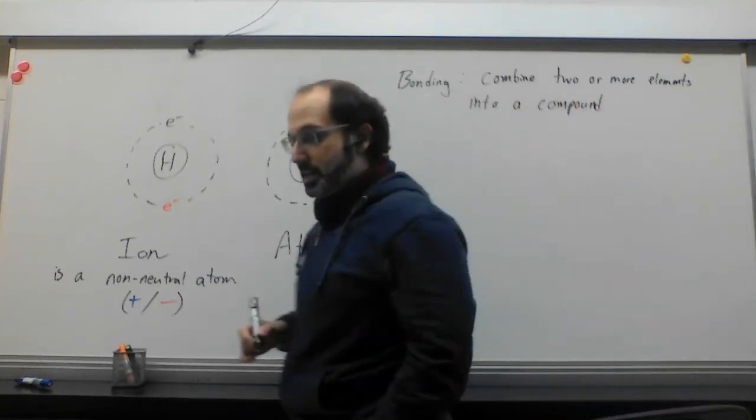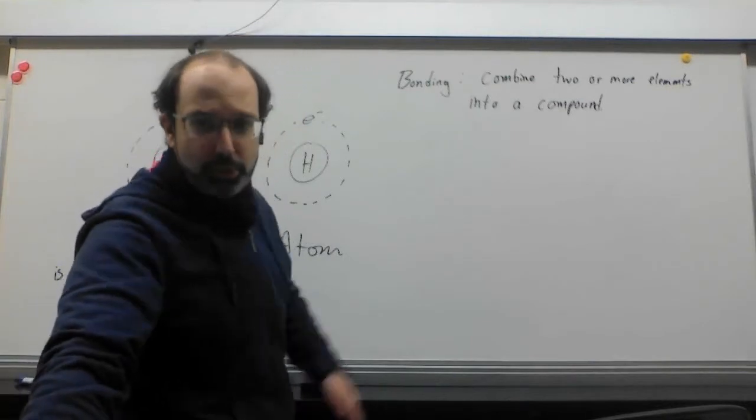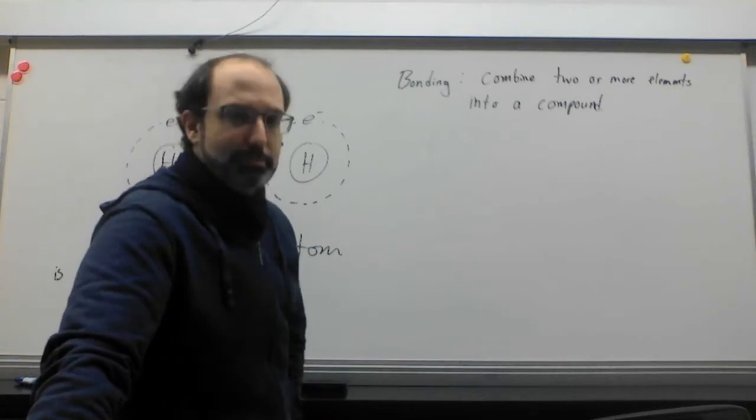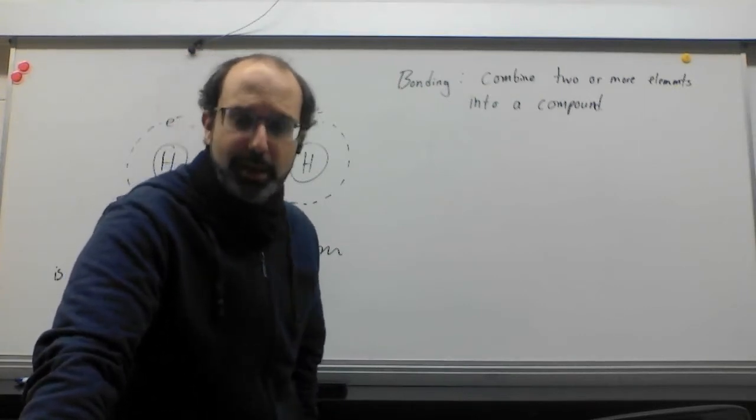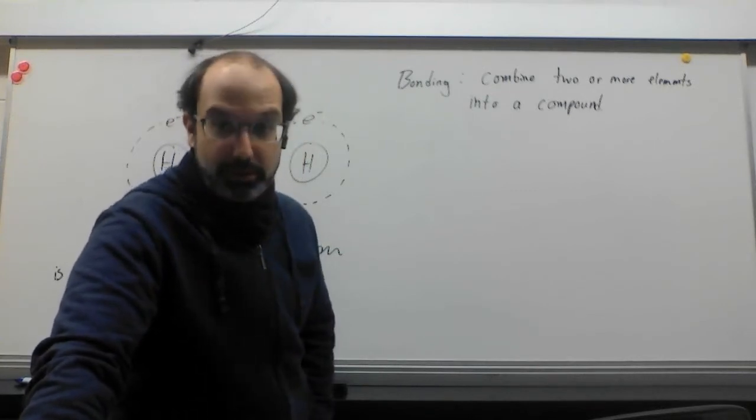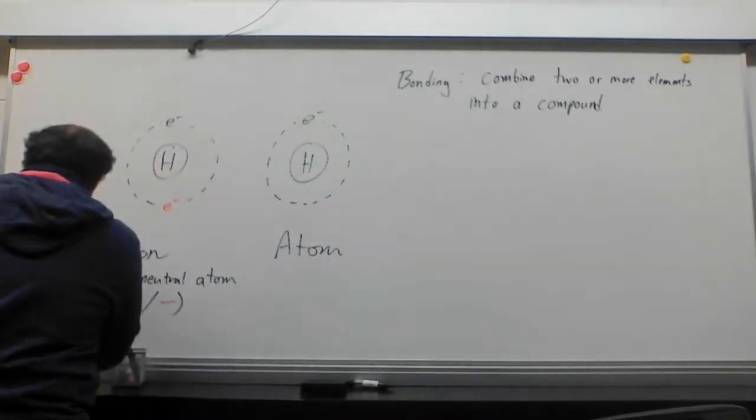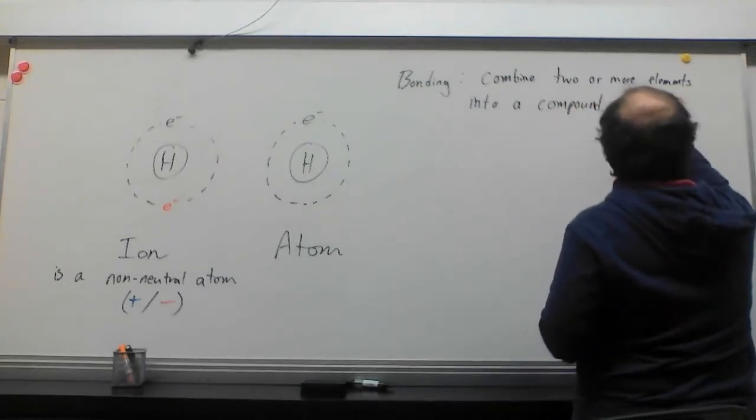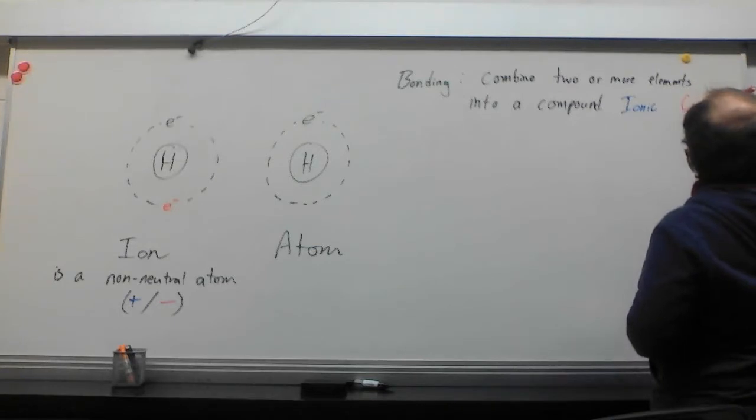But either way, bonding is what happens when you combine two or more elements to form a compound. So bonding is another big definition for us. It's when we combine two or more elements into a compound. Now, a compound is just a fancy science way of saying a bigger, more complicated thing. So you are made of compounds because you are not simple by any stretch of the imagination. You are made of multitude of complicated and interlocking pieces. So you would be a compound.